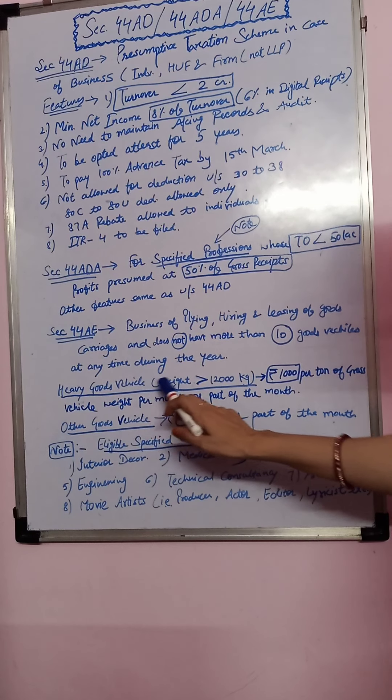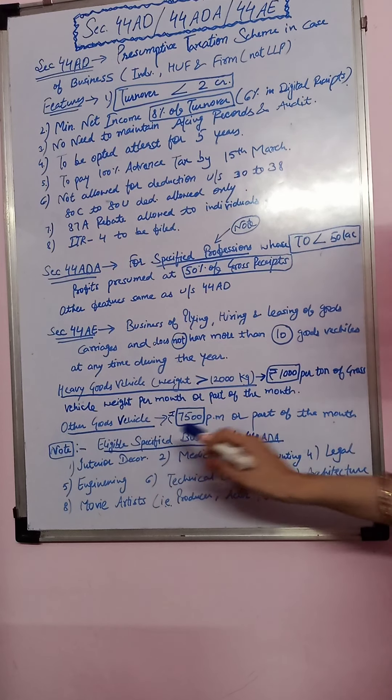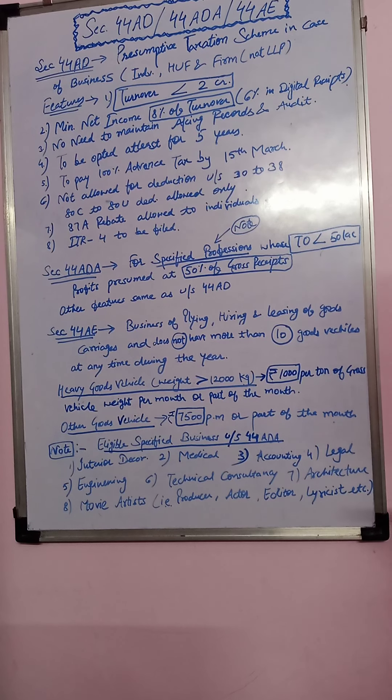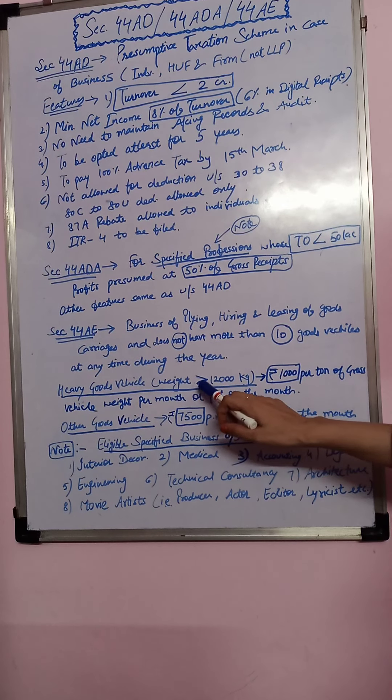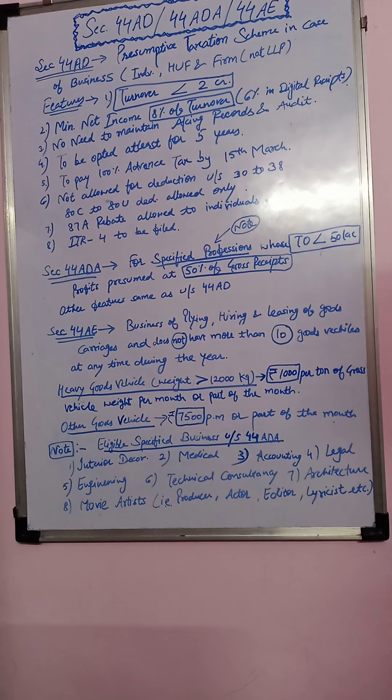Here, there will be heavy goods vehicle and other goods vehicle. We have two categories. Heavy goods vehicle we will define as whose weight is greater than 12,000 kg.